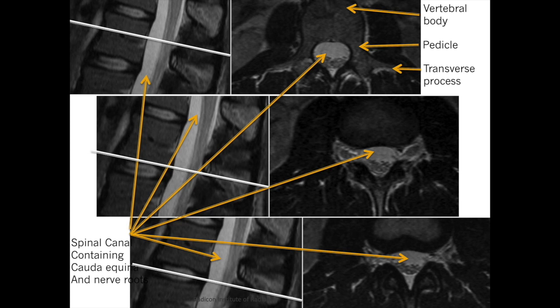On the bottom pair of images, a cross-section through the disc shows the thecal sac and facet joint, while the relevant nerve root is already outside the exit foramen.